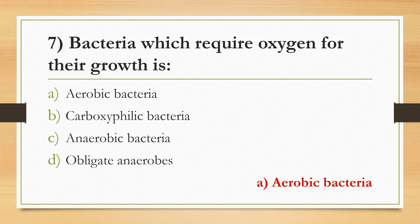Regarding other options: Carboxyphilic (Capnophilic) bacteria require a high concentration of carbon dioxide to grow — examples include Campylobacter, Haemophilus influenzae, and Neisseria gonorrhoeae. Anaerobic bacteria are killed by normal atmospheric concentrations of oxygen — examples include Bacteroides fragilis and Peptostreptococcus.